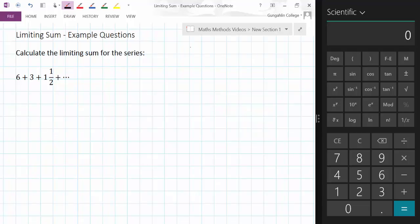Remember the limiting sum or the infinite sum is S infinity equals A over 1 minus R, where A is the first term and R is the common ratio.